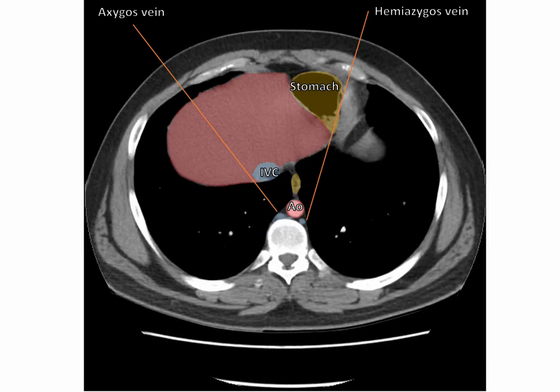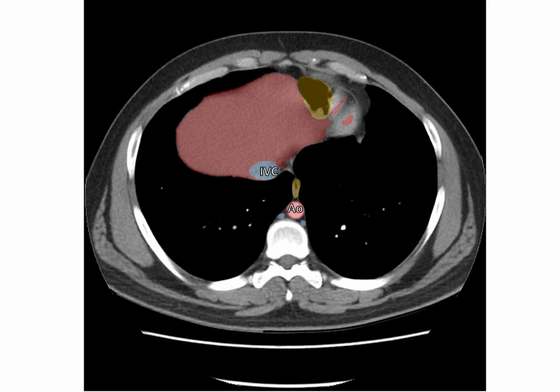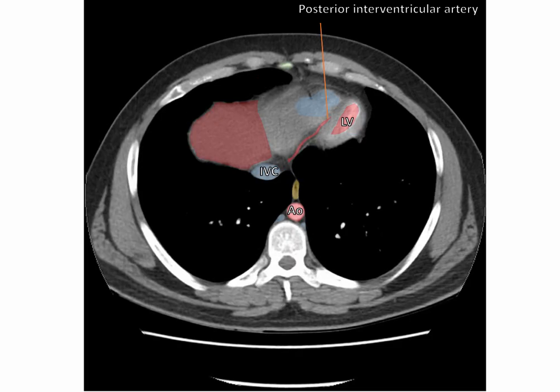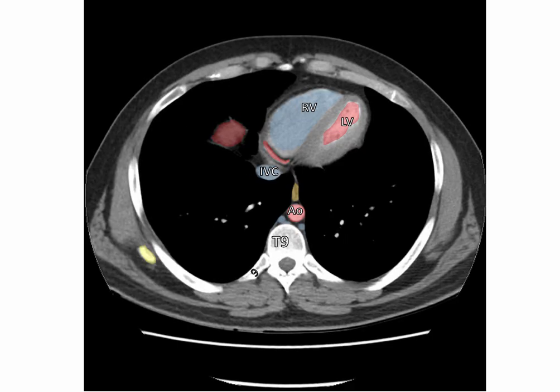We are now almost completely above the level of the diaphragm. We can begin to see parts of the pericardium and heart. Here is the left ventricle, and here are the posterior interventricular vessels. At this level, which we call the low cardiac level, we are beginning to see the right ventricle, which is separated from the left ventricle by the interventricular septum. We can follow the posterior interventricular artery more proximally to where it is becoming the right coronary artery. Also at this level, we can begin to see the inferior angle of the scapula.